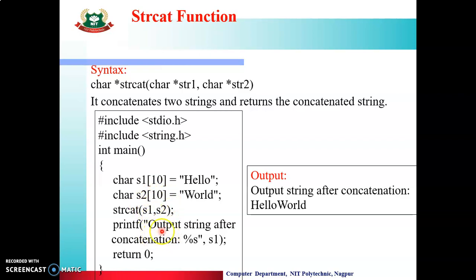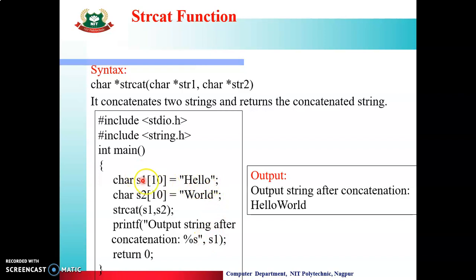तो output अगर देखेंगे: 'string after concatenation %s', string को display कर रहे हैं इसलिए %s, और result हमारा s1 में store है। तो किस तरह से output मिलेगा - पहले print होगा 'hello', और पहले string के बाद दूसरा string join होगा, तो 'world'। इस तरह से हमारा output मिलेगा: 'hello world'।